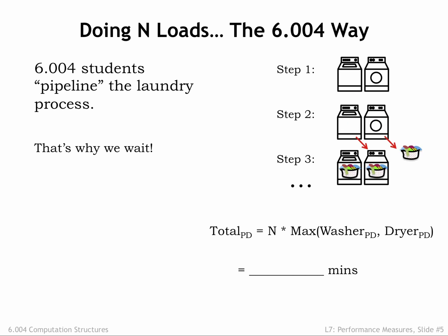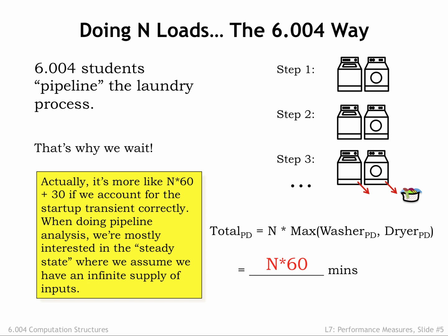We repeat the overlapped wash-dry step until all N loads of laundry have been processed. We're starting a new washer load every 60 minutes and getting a new load of dried laundry from the dryer every 60 minutes — the effective processing rate of our overlapped laundry system is one load every 60 minutes. So once the process is underway, N loads of laundry takes N times 60 minutes, and a particular load of laundry, which requires two stages of processing time, takes 120 minutes. In the performance analysis of pipeline systems, we're interested in the steady state where we're assuming that we have an infinite supply of inputs.